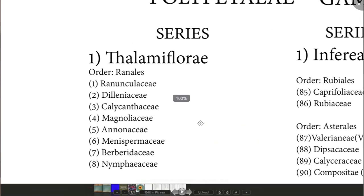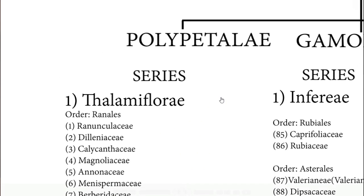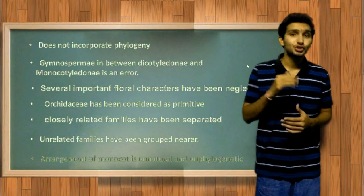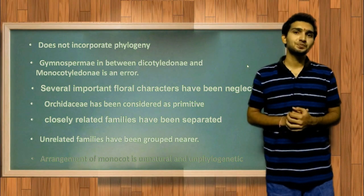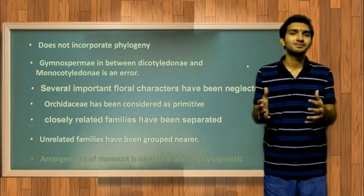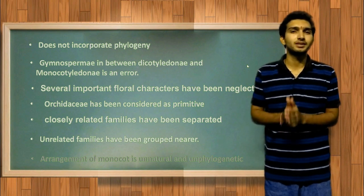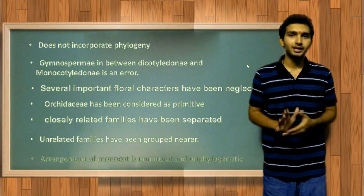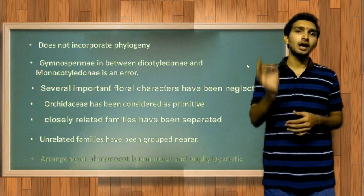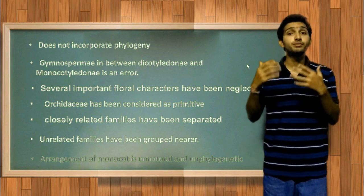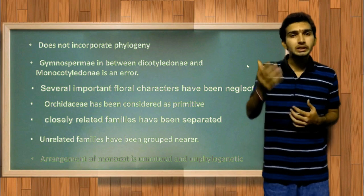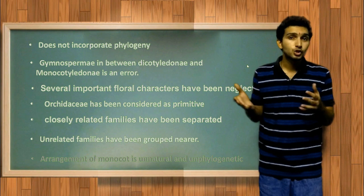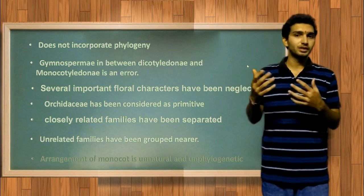One more example is that Loranthaceae of series Daphnales of Monochlamydeae deserves a place in Ranales of series Thalamiflorae of Polypetalae. The closely related families Podostomaceae and Lauraceae are separated and not kept near each other. Monochlamydeae as a subclass is considered to be an artificial group, making it difficult to place closely related families such as Chenopodiaceae and Caryophyllaceae close to each other.